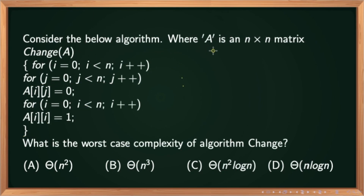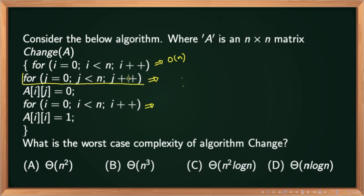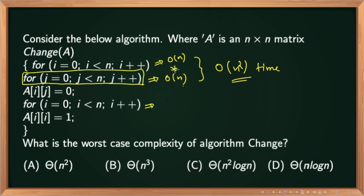Consider the below algorithm where A is an n×n matrix passed as a parameter to the algorithm change. We have three for loops but the third for loop is not inside the second for loop. So the most executed line is the second for loop. The first and second for loops are nested: each independently executes O(n) times, giving a total of O(n²). So the answer is A.